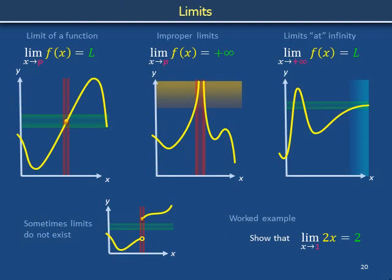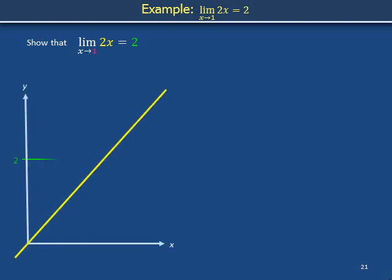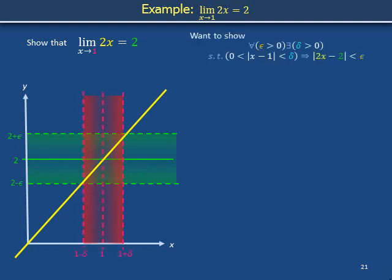When looking at a plot, we can often intuitively pick out the limit of a function as x approaches a point. In the following worked example, we will calculate the limit of a function more formally. We want to show that the limit as x approaches 1 of the function with association rule 2x equals 2. The association rule 2x corresponds to a straight line. We draw a green horizontal line at y equals 2 and a red vertical line at x equals 1, then ask whether we can find a delta defining red-shaded regions within which the yellow line remains vertically contained by the green band, regardless of how thick or thin we make the green band.